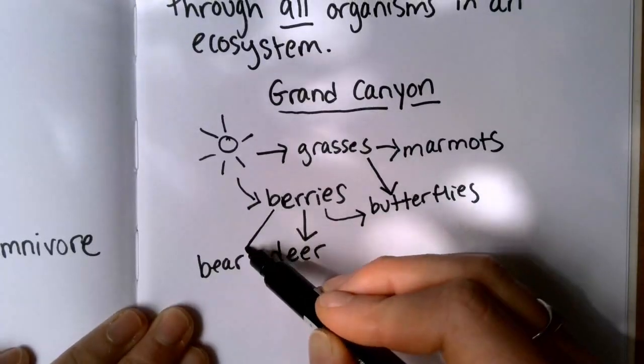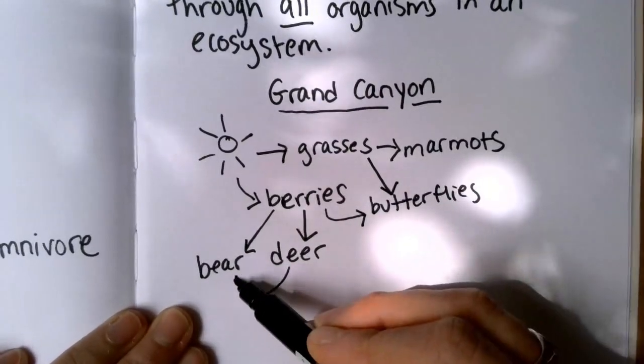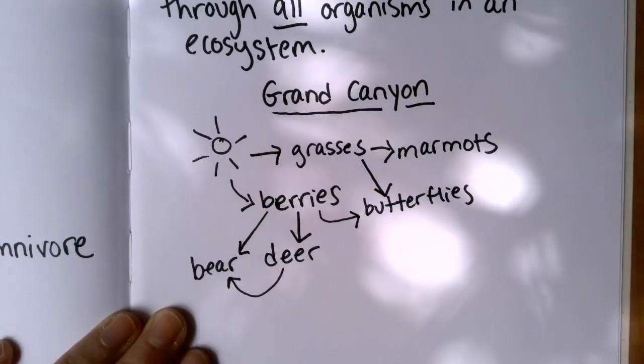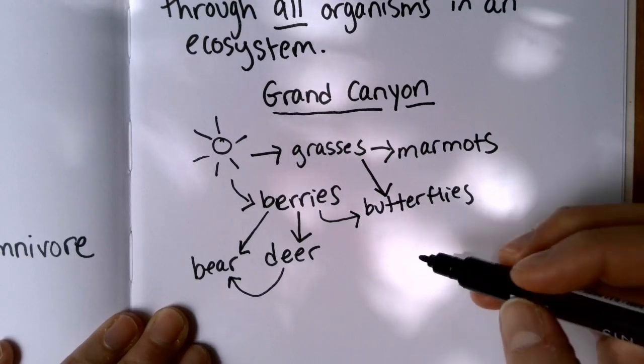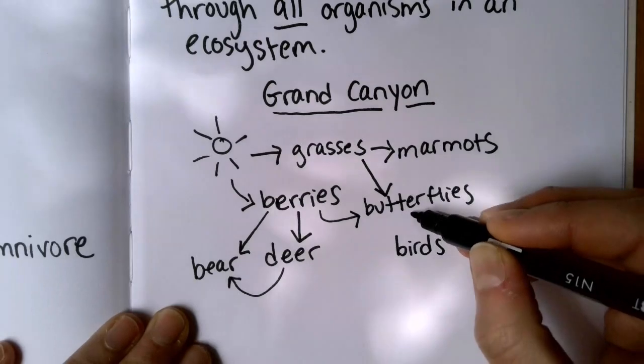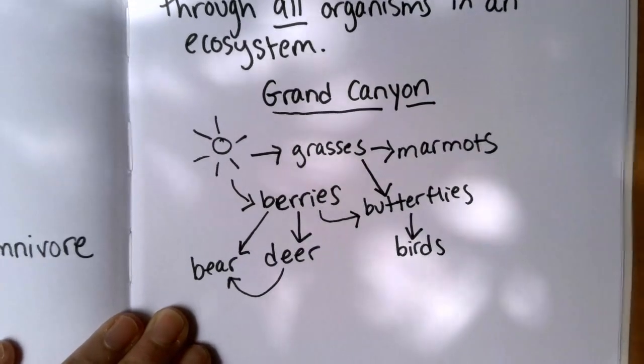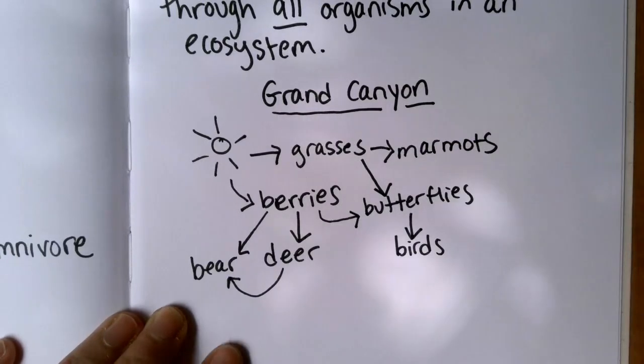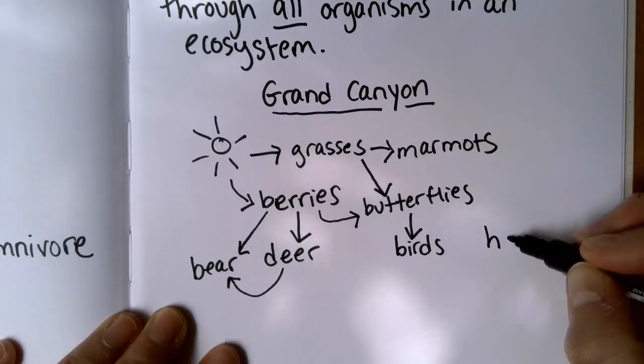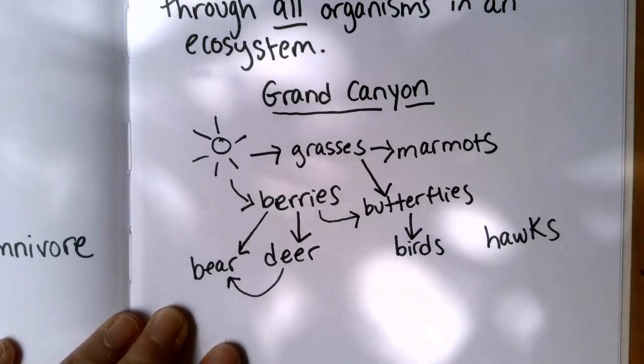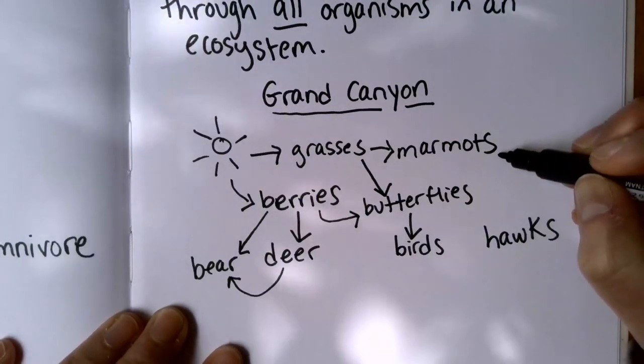Alright, next up we have birds. It says on the slide that birds only eat the butterflies. So I might draw them right here next to the butterflies. And the last consumer are hawks. Remember hawks are like those big birds. They kind of look like eagles. So hawks eat both marmots. So I'm going to draw the arrow towards the hawk. And they also eat birds.